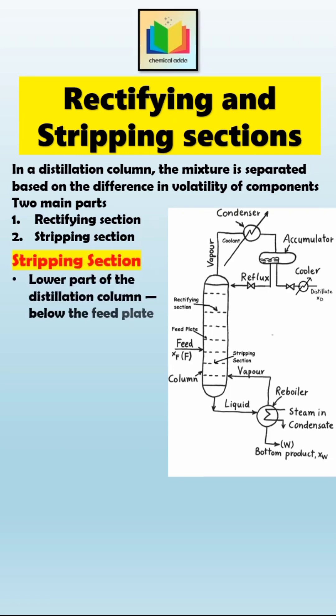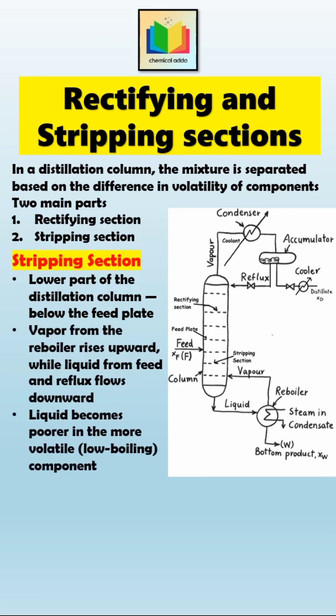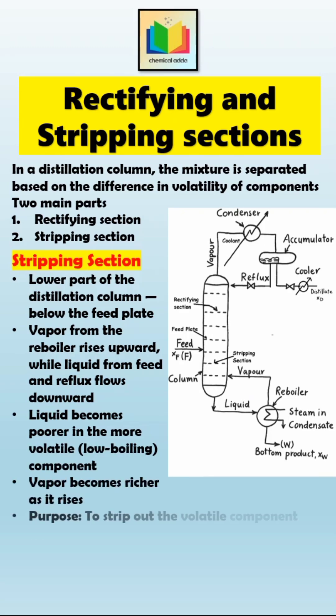The lower part of the column, that is, the section below the feed plate, is called the stripping section. Here, vapor from the reboiler moves upward and liquid from the feed and reflux flows downward. The liquid becomes poorer in the more volatile component as it flows down, and the vapor becomes richer as it rises.